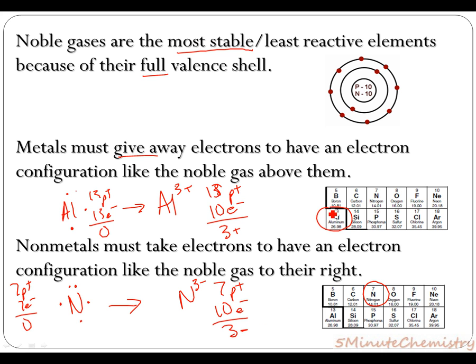So again, just to summarize that idea, the aluminum ends up looking like the noble gas above it. The nitrogen ends up looking like the noble gas to its right. In either case, they're more electrically stable because they have the same number of electrons as a noble gas.